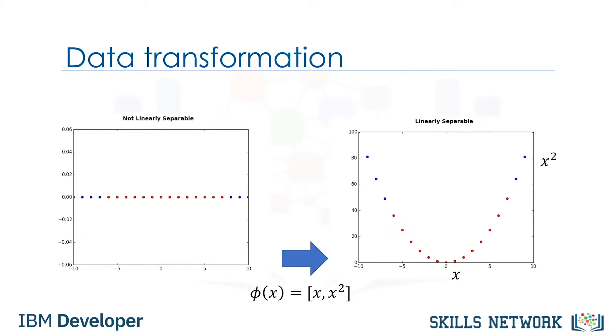For example, you can increase the dimension of data by mapping x into a new space using a function, with outputs x and x squared. Now the data is linearly separable, right? Notice that as we are in a two-dimensional space, the hyperplane is a line dividing a plane into two parts where each class lays on either side. Now we can use this line to classify new cases.